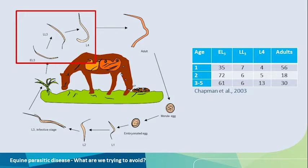Arrested development does not occur in foals during their first grazing season, but it does occur in subsequent years. This accumulation of encysted stages is believed to be a risk factor for larval cyathostominosis. The more larvae that you have encysted and arrested in the mucosal walls, the potentially higher risk for the disease to develop. Some climates with more pronounced differences between seasons may actually predispose animals to this condition, though this is primarily at the hypothesis stage at this moment.